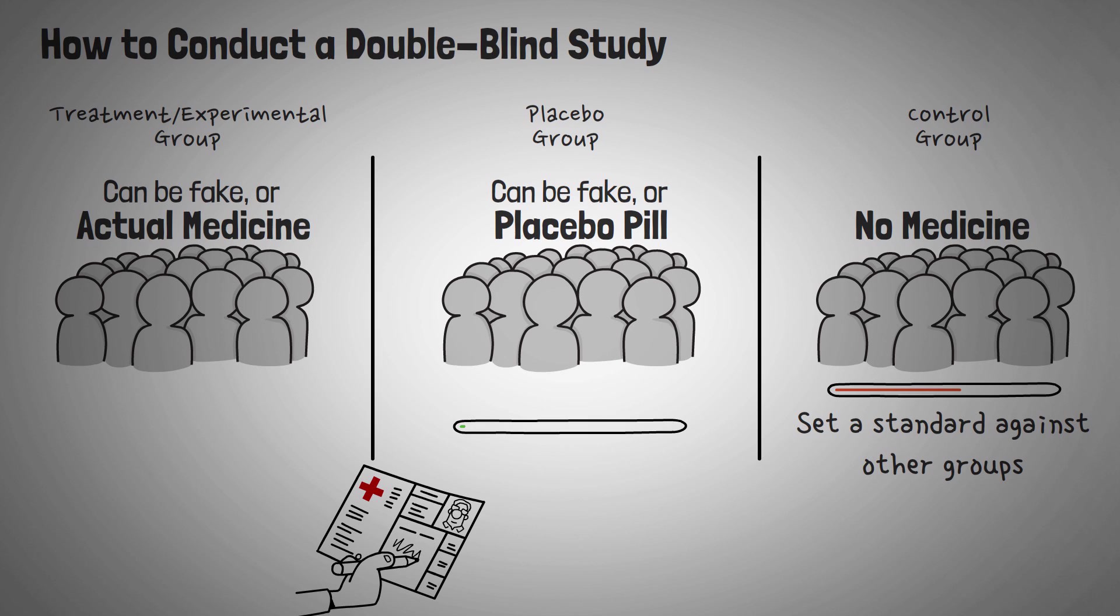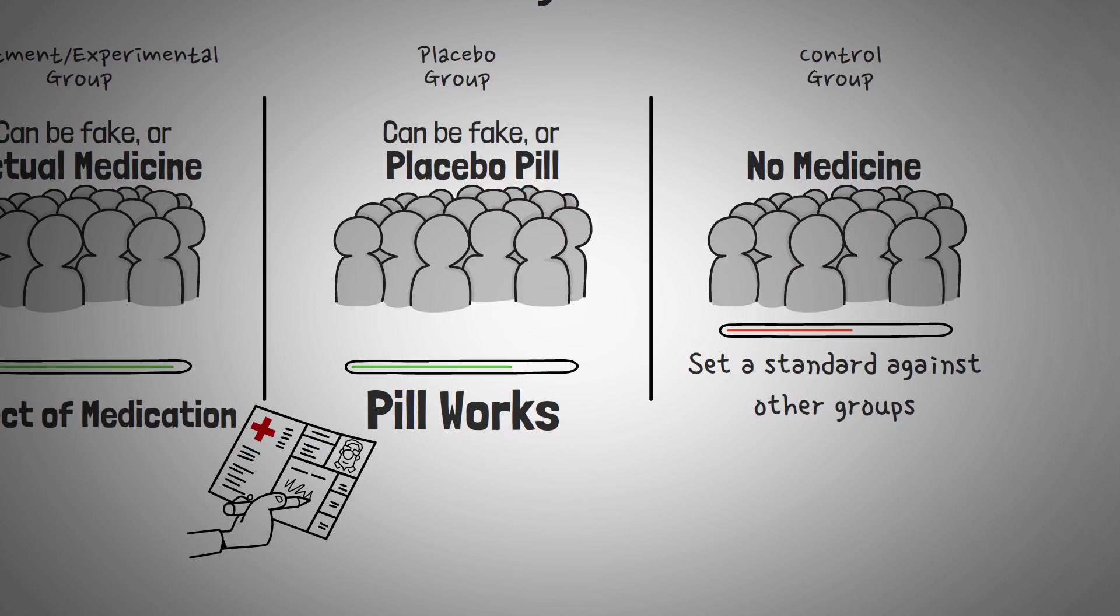If subjects in the placebo group are better off than the control group, this positive development can be attributed to the participants' belief that the pill works. But, if people in the treatment group improve more than those in the placebo one, then the results can be attributed to the effect of the medication.